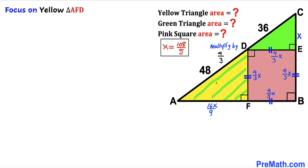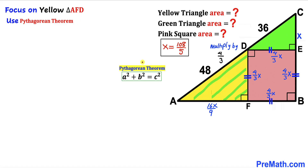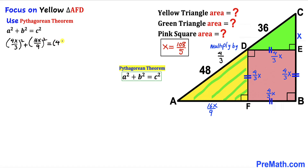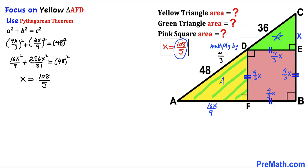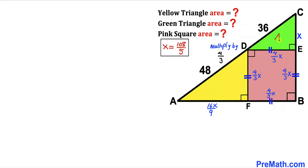If we apply the Pythagorean theorem to the yellow triangle AFD — with hypotenuse 48 and legs (4/3)x and (16/9)x — and simplify, we again get x = 108/5. So this x value remains consistent for both triangles.